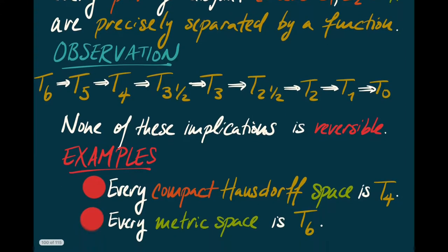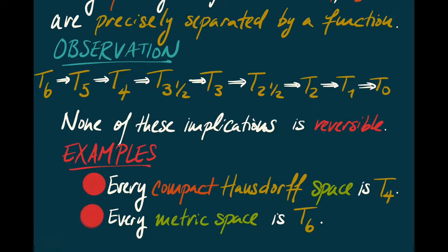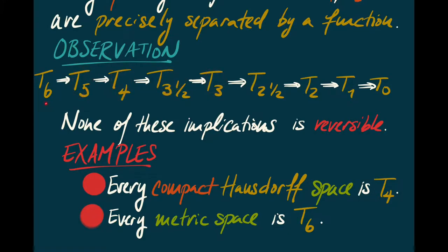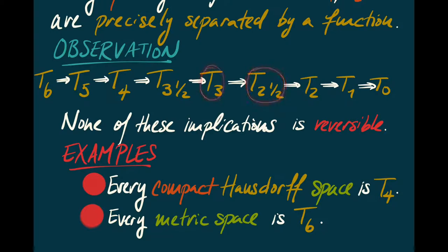The observation — not entirely trivial — is that T6 implies T5, T5 implies T4, T4 implies T3½, T3½ implies T3, and so on. Each of these implies the next, and none of these implications is reversible. For every single one, there's an example of a space that's T2½ but not T3, T3 but not T3½, and so forth. In general, these counterexamples are slightly annoying to write down and unpleasant to reflect upon, so we won't discuss them in much detail.